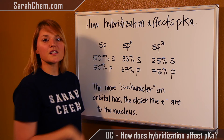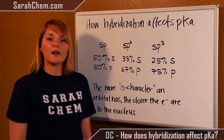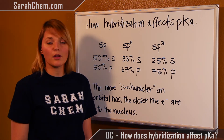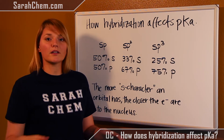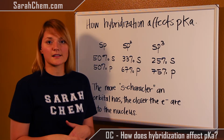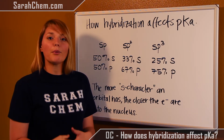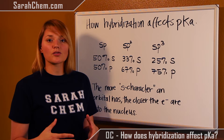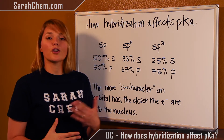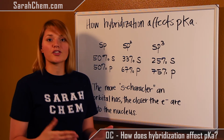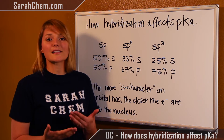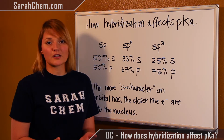The reason we care about s character is because on average in an orbital, electrons are going to be closer to the nucleus when they are in an s orbital. This is important because when the electrons are closer to the nucleus, your negative charge is closer to your positive charge, and that's a very stabilizing feature.